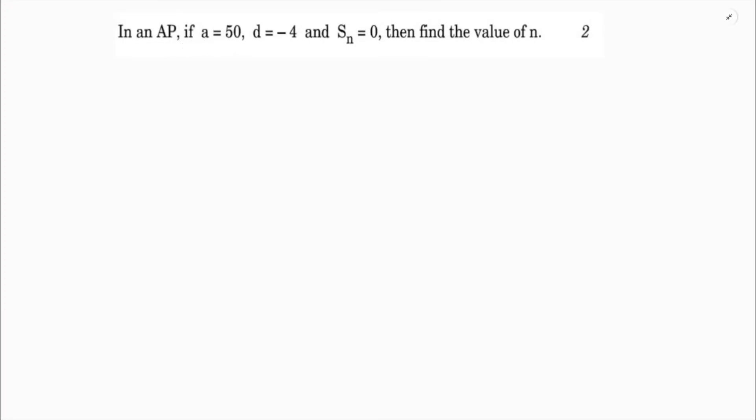In an AP, if a equals 50, d equals minus 4, and Sn equals 0, then find the value of n. Here, a equals 50, d equals minus 4. Sum of n terms is 0.